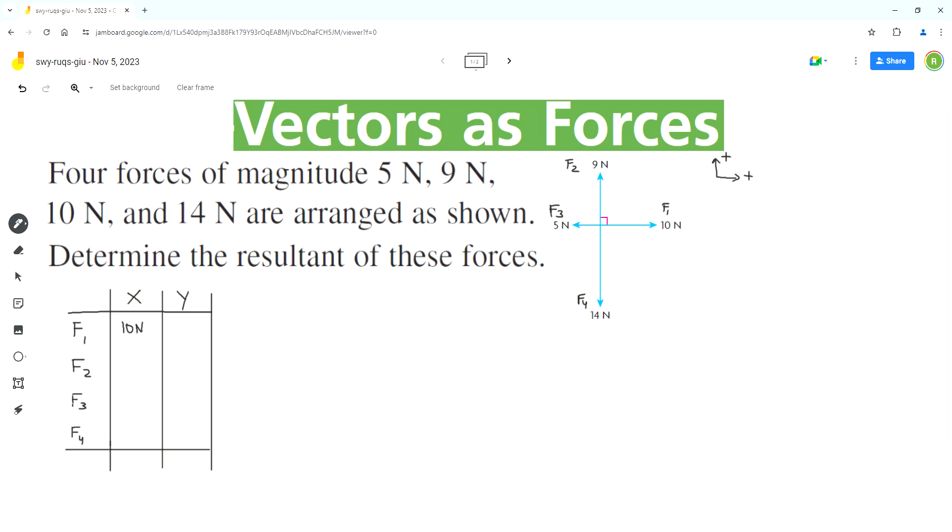The y component of F1 is zero because this vector is horizontal. For F2, the x component is zero and the y component is nine newtons.